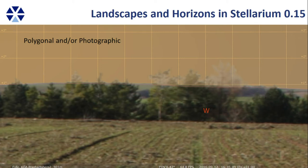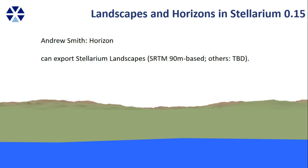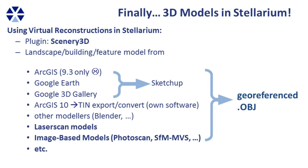You can even have a measured polygon line — if you go out with a total station and measure your horizon line, you can put that into Stellarium to have a precisely visible horizon, so you can see exactly where a mountain blocks the view and where the sun might rise at a given time. There's also software called Horizon by Andrew Smith that can export native Stellarium panorama horizons modeled from SRTM data. It's not totally accurate but a very good starting point. We also added a plug-in to Stellarium called Scenery3D.